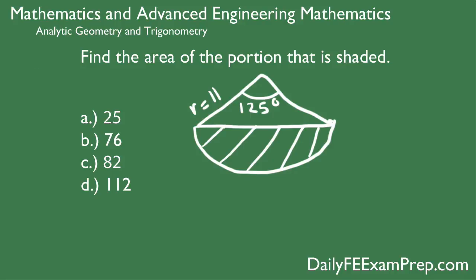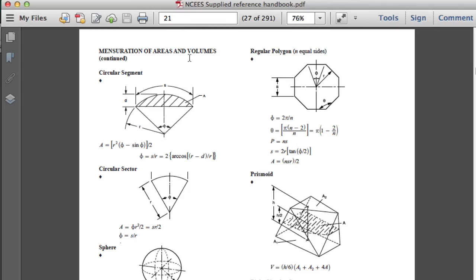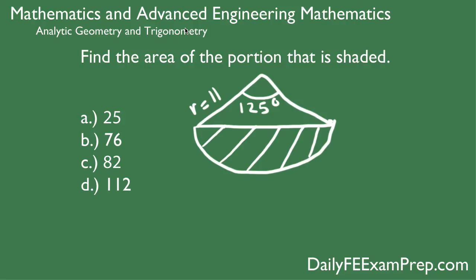Second, we want to look at any formulas we might be needing in the reference manual. We have to use a formula for this and it's located on page 21 of the NCEES-supplied reference handbook under the circular segment. We're going to be using this formula: A equals r squared times phi minus sine phi divided by two. This problem may look intimidating at first, but if you just take it step by step, it's really not that bad.